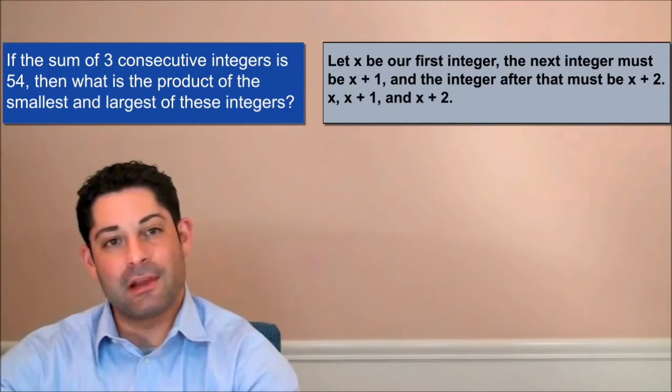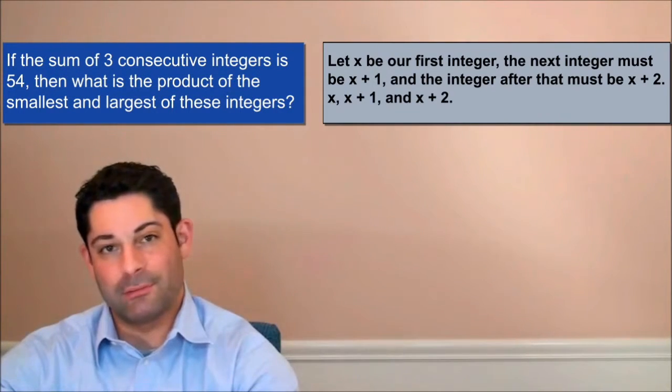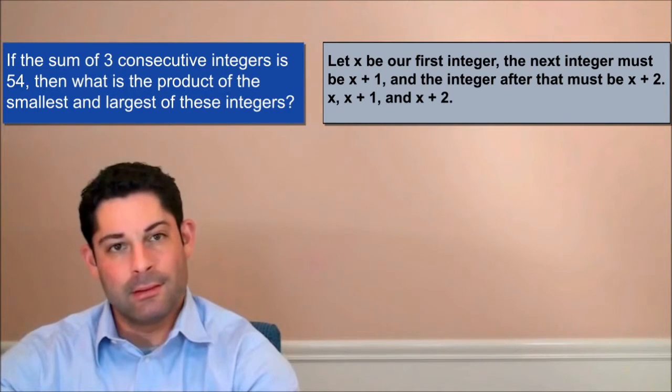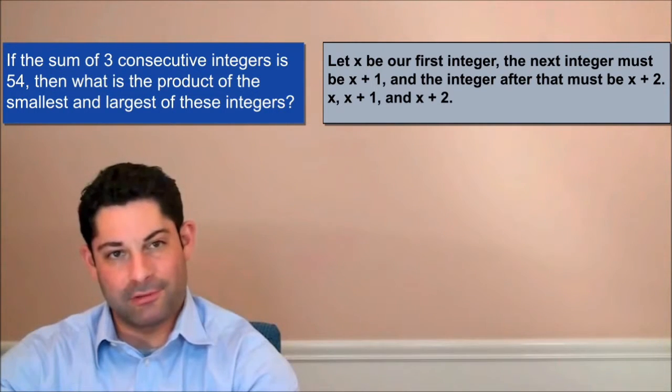The first step is to set up the right algebraic equation. Let x be the first integer. The next integer must be x plus 1, and the integer after that must be x plus 2.